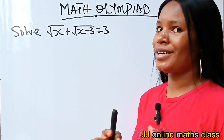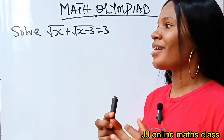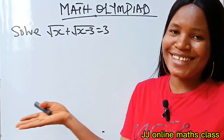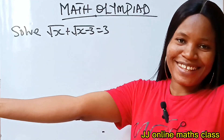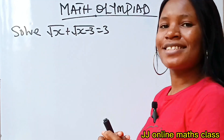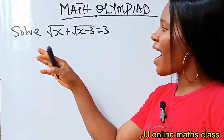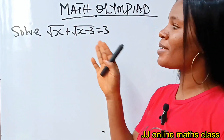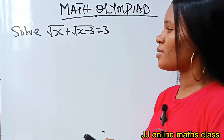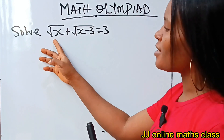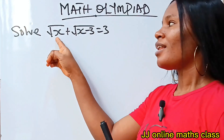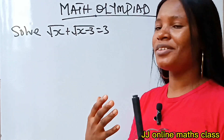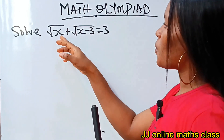Welcome to my channel, and if you are a returning fan, take this hug. We are asked to solve for x in this math olympiad question. The first thing we need to do is make a substitution — let's call this a and let's call this b, to make this look less ambiguous.